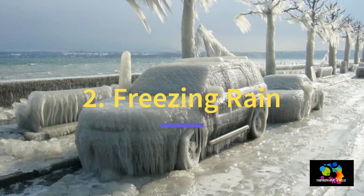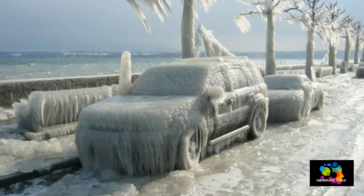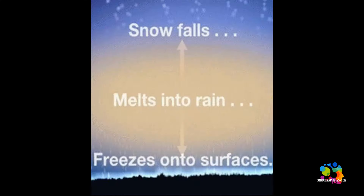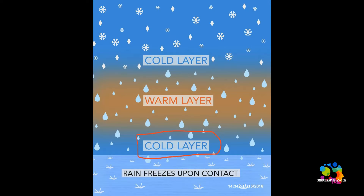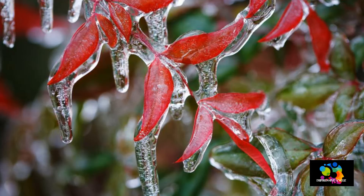The next form of precipitation is freezing rain. As it is warmer down in the atmosphere, the snow completely melts on the way down from the clouds. It then passes through a thin layer of freezing air which is below freezing point near the surface of the earth. This causes the liquid water to freeze on contacting with the surface. This is called freezing rain.